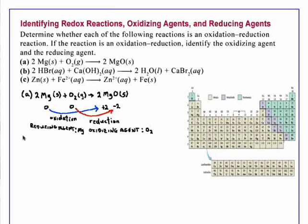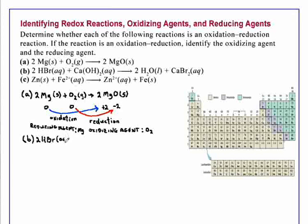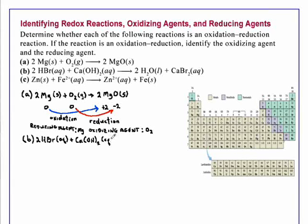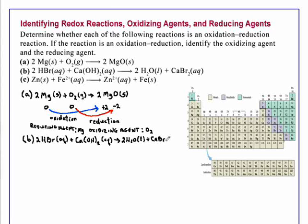Let's look at Reaction B. We have 2 HBr(aq) plus Ca(OH)₂(aq) reacting to form 2 H₂O(l) and CaBr₂(aq).